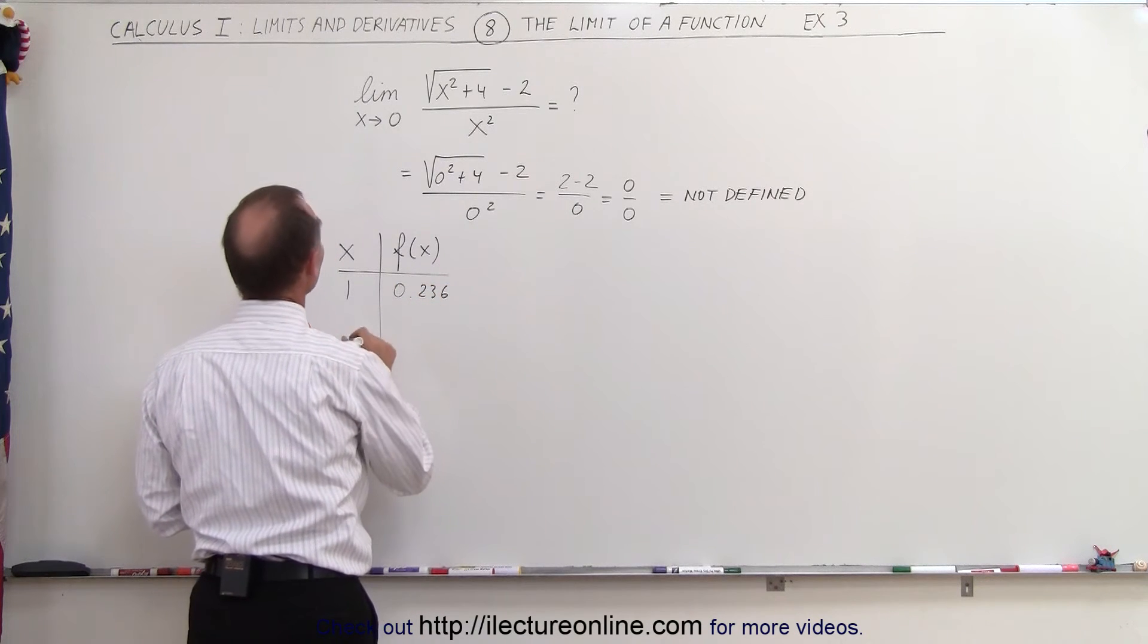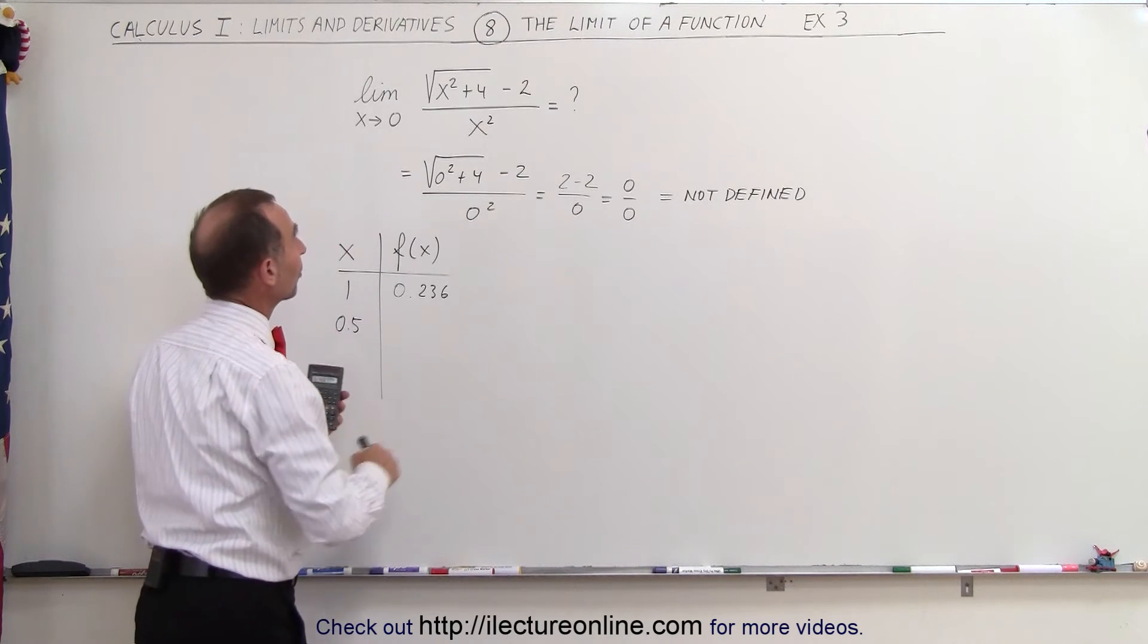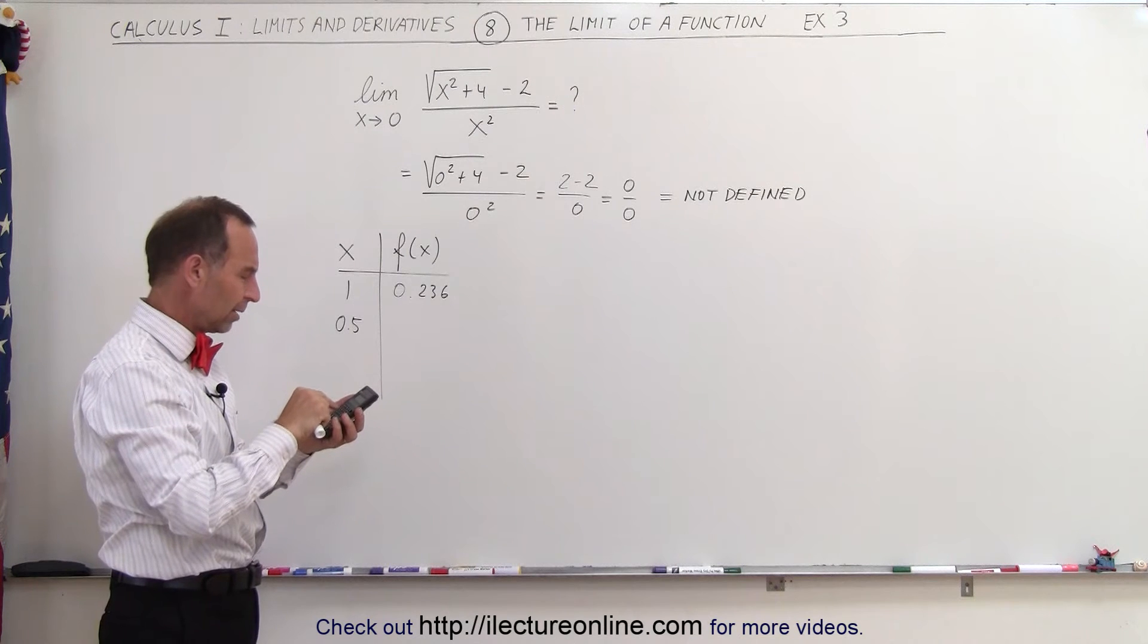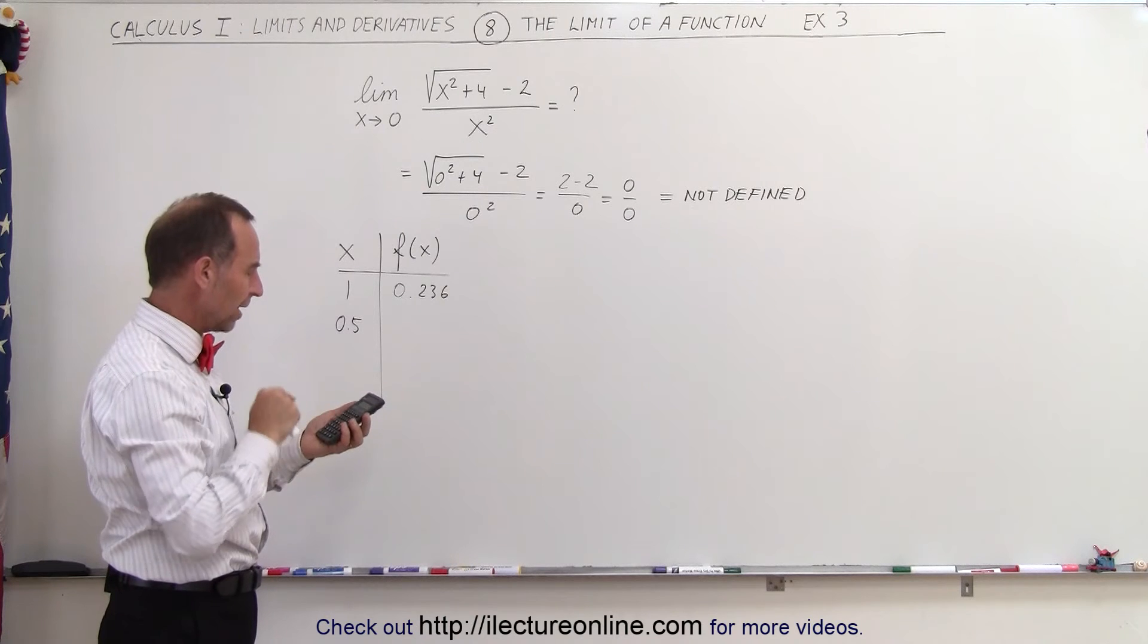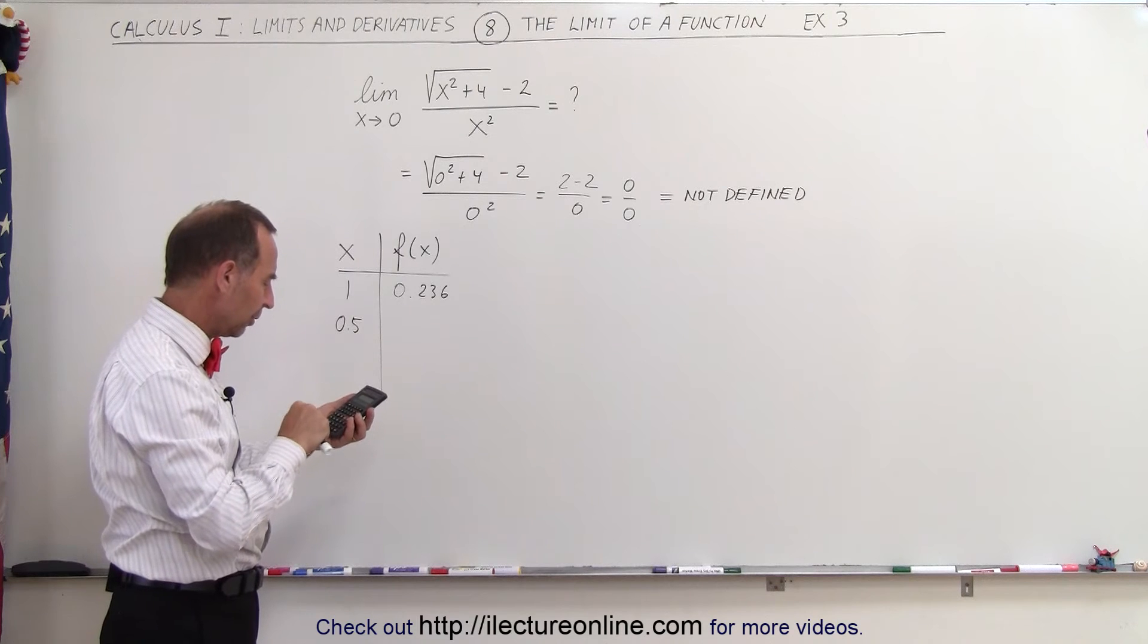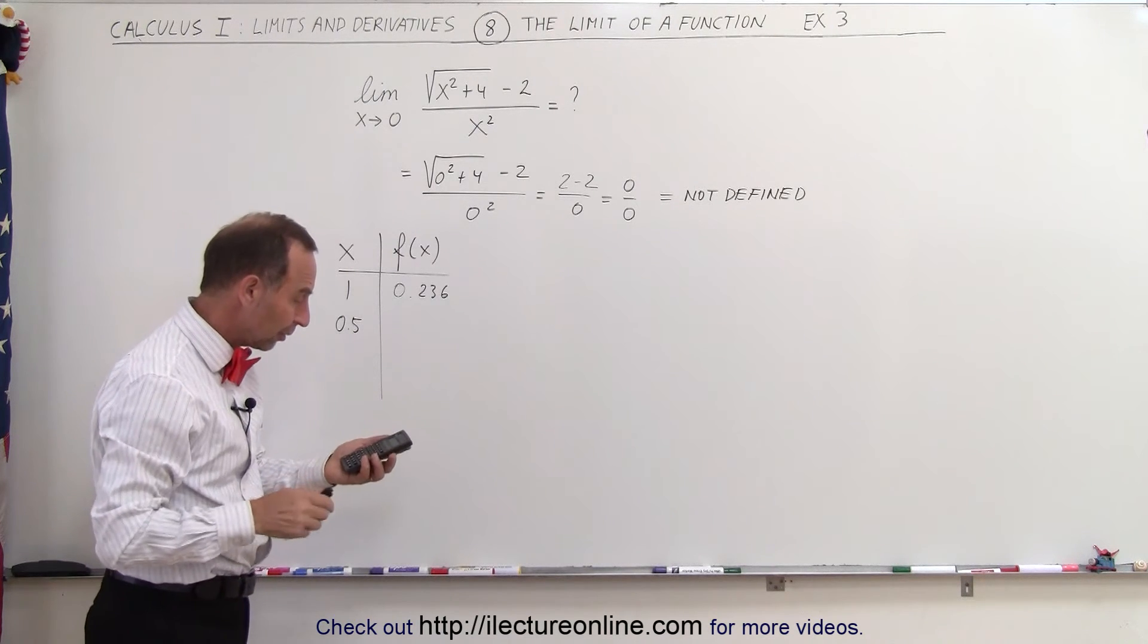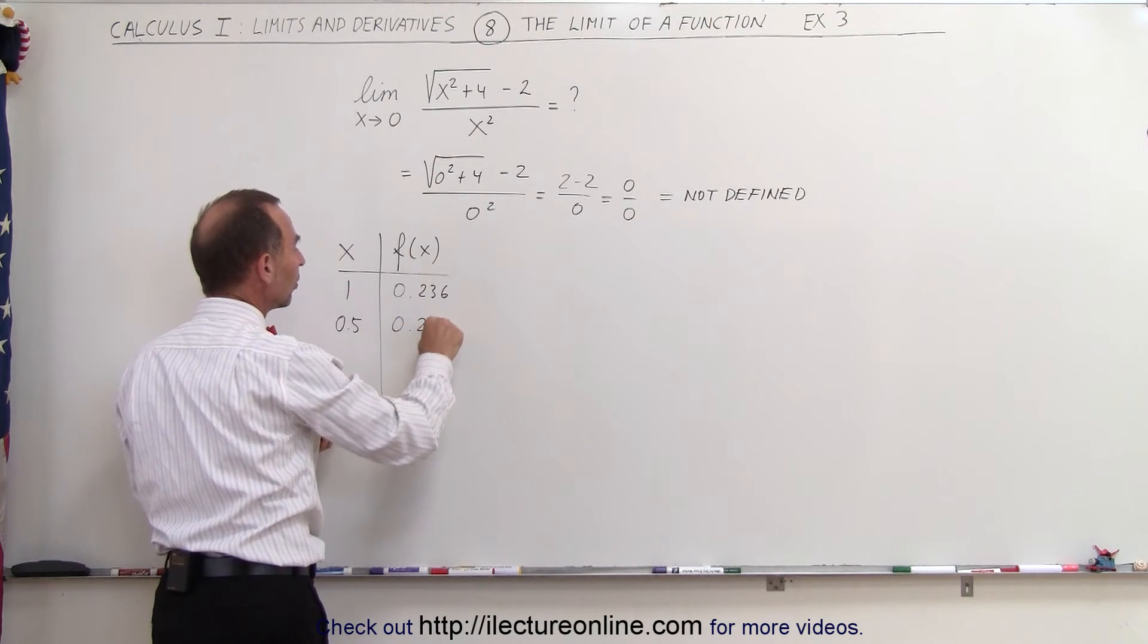All right, now let's x equals 0.5. So when x becomes 0.5, we plug in 0.5 there. So we get 0.5 squared plus 4. Take the square root of that, subtract 2, and then divide by 0.5 squared. Divide by 0.5, excuse me, squared equals. So now we get 0.246.